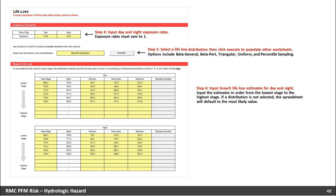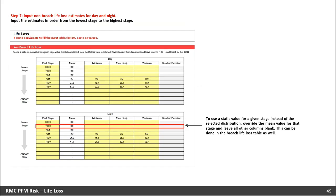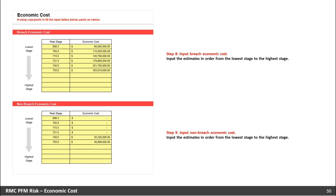Next, input breach life loss estimates for day and night. The estimates need to be input in order from lowest stage to highest stage. If the distribution is not selected, the spreadsheet will default to the most likely value. Scrolling down within the same worksheet will do the same thing for the non-breach life loss, inputting the estimates in order from the lowest stage to the highest stage. If you want to use a static value for a given stage instead of a selected distribution, override the mean value for that stage and leave all other columns blank. This can be done in the breach life loss table as well.